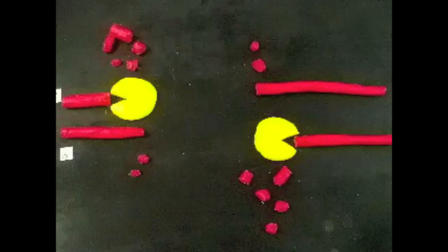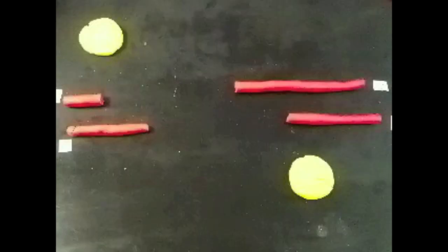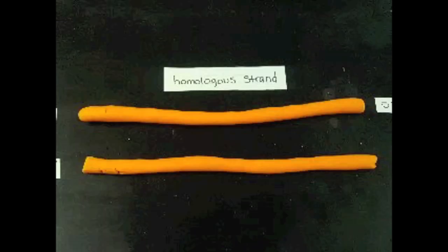Once there, they begin to digest strictly the 5' end, leaving 3' overhangs.